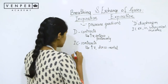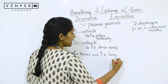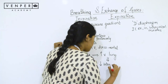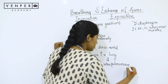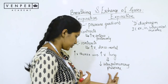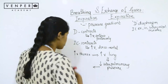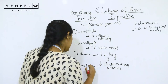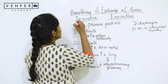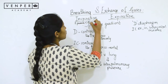This increase in thoracic volume leads to an increase in pulmonary volume, which decreases the intrapulmonary pressure compared to atmospheric pressure. This leads to forceful inspiration — air flows in from the atmosphere. For inhalation to take place, we can say that pulmonary pressure should be less than atmospheric pressure.